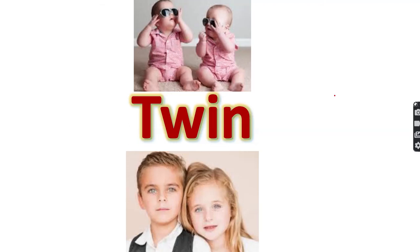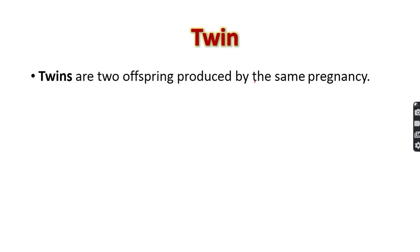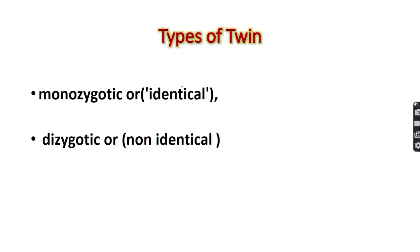Assalamu alaikum, welcome to Easy Human Interview channel. In this video I discuss about twins. Twins are the two offspring produced by the same pregnancy. Types of twins: monozygotic or identical twin, and dizygotic or non-identical twin.